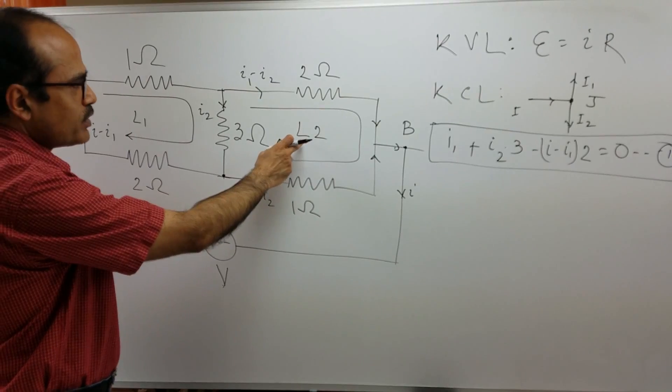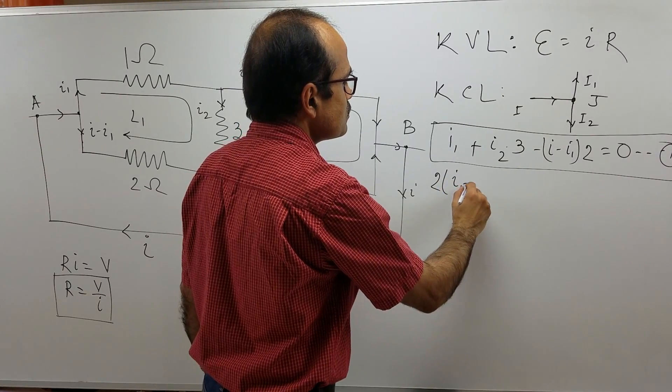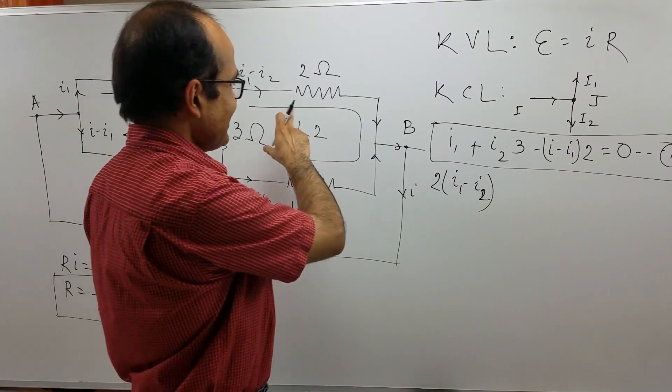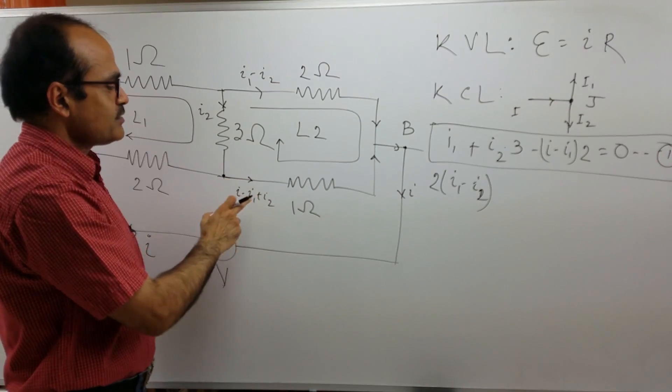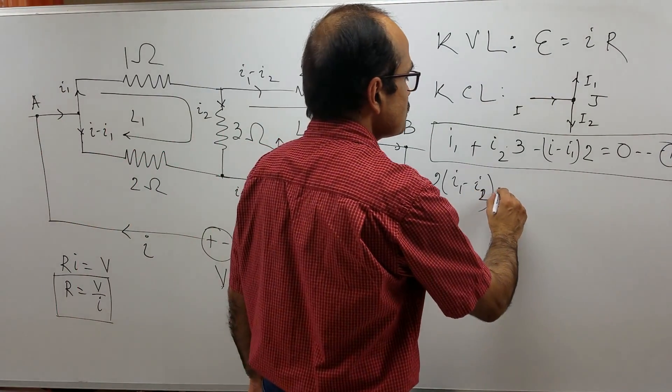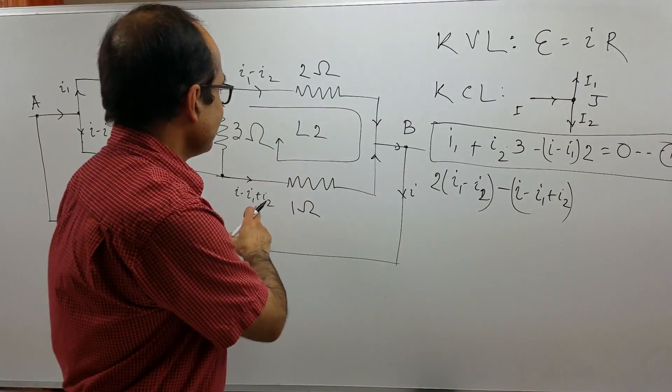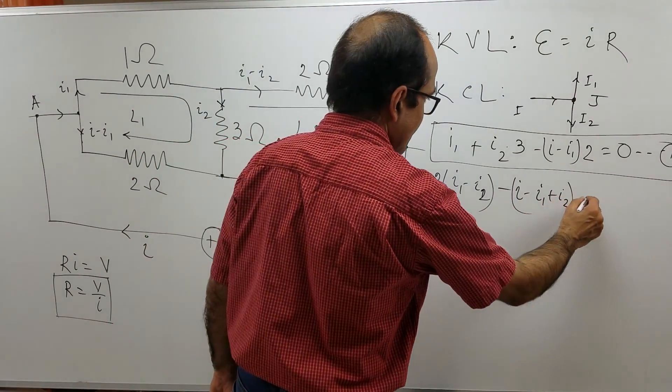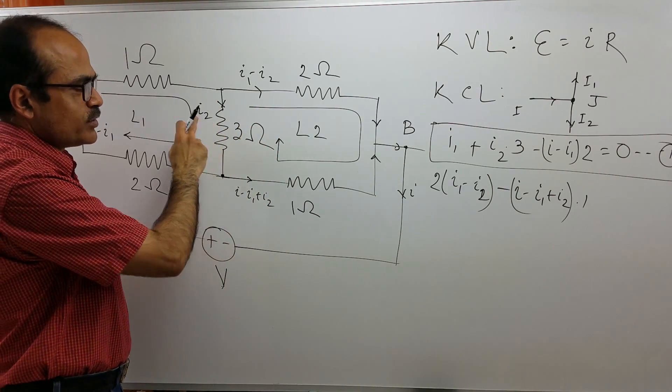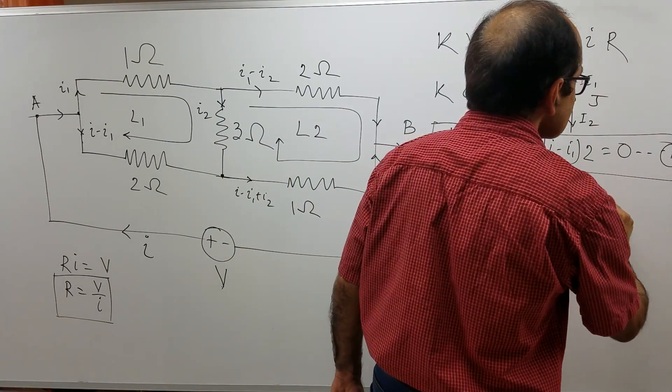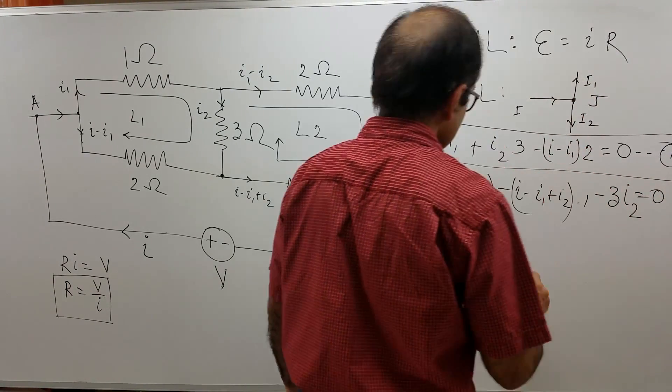Now, equation number 2 is from loop number 2. It is I1 minus I1 plus I2 times 2 and then I minus I1 plus I2 is flowing opposite to the positive sense. So I put a negative sign. And that is multiplying 1, times 1 and this current I2 is also flowing opposite to the positive sense. So it is minus 3 I2 is equal to 0. That is equation number 2.